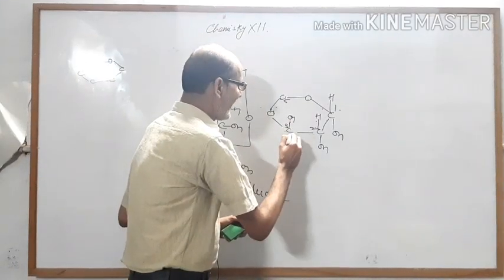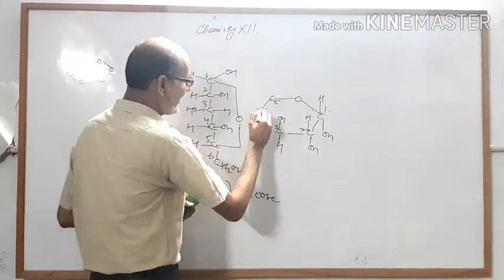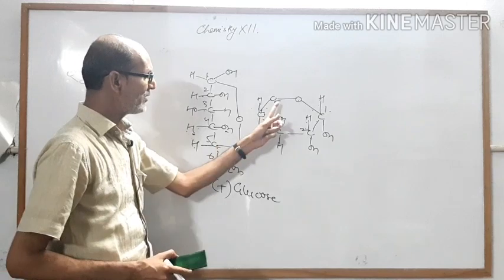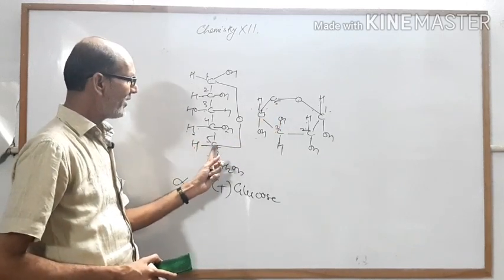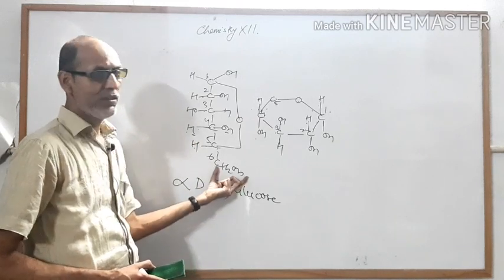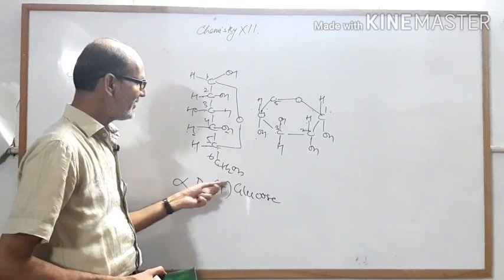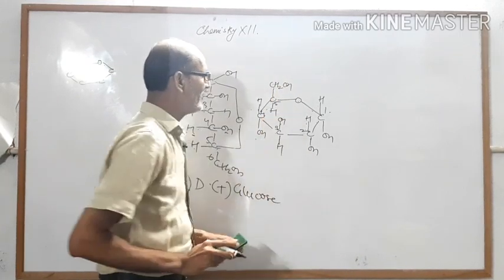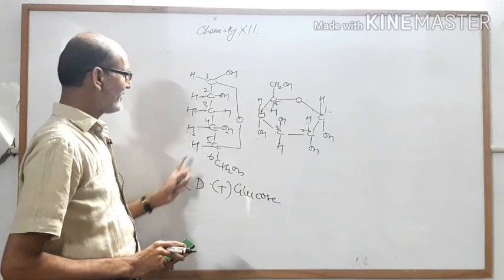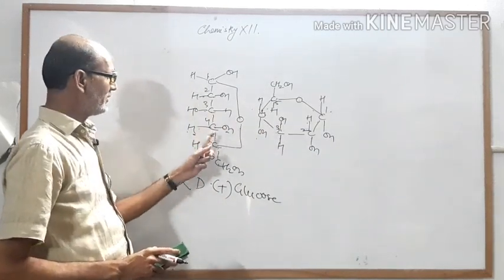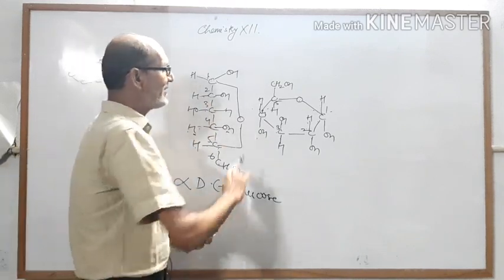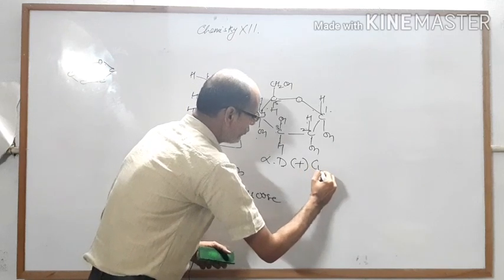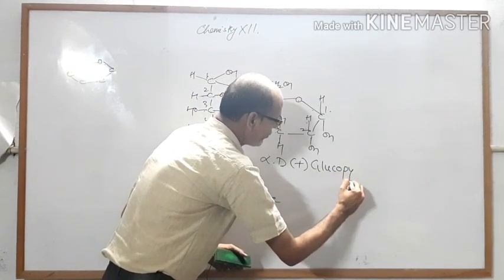At carbon number two: top side H, bottom side OH. At carbon number three: top side OH. At carbon number four: top side H (right side in Fischer = bottom in Haworth), bottom side OH. At carbon number five: this is connected to the ring; one H and one CH2OH remain — CH2OH always goes on the upper/outside of the pyranose ring and H goes on the downside. This compound is named alpha-D-plus glucopyranose.